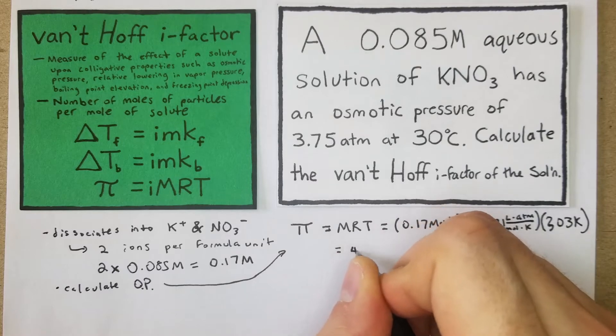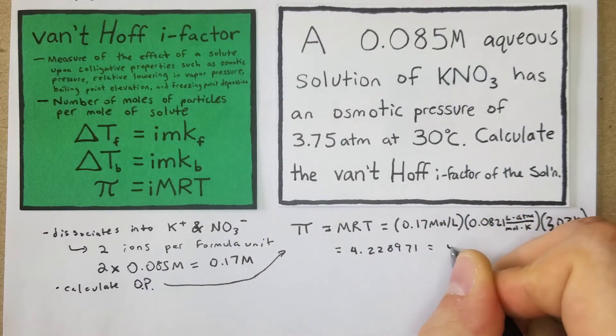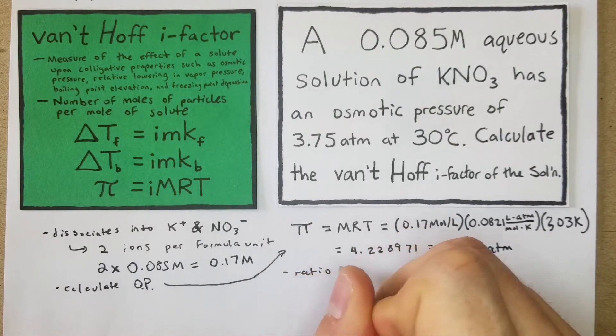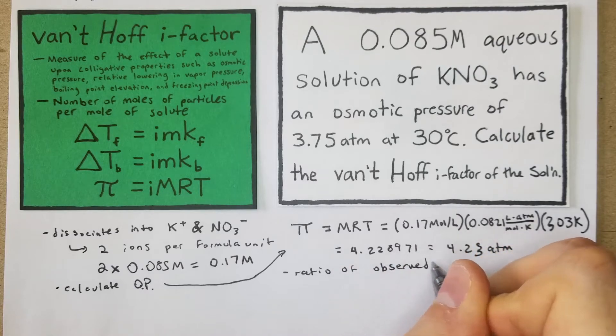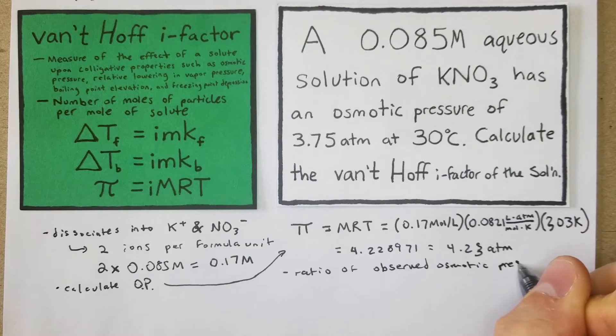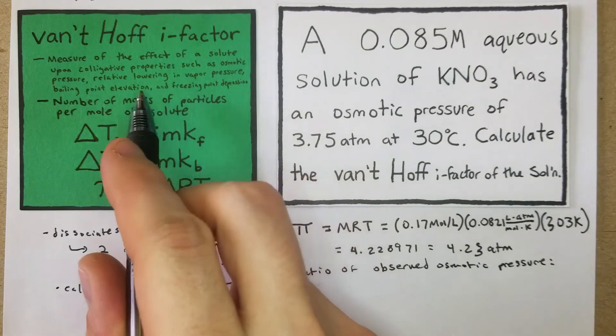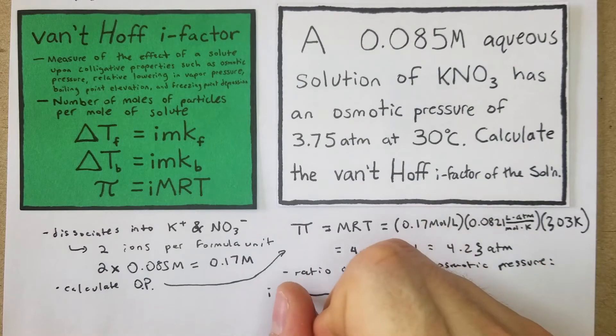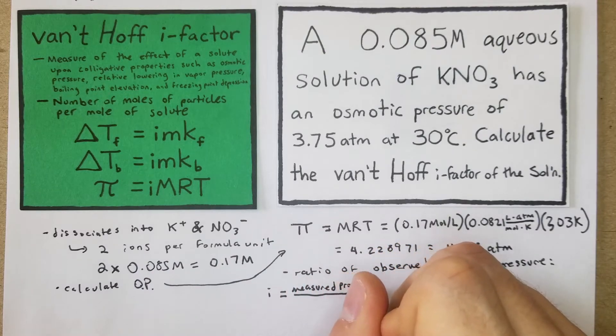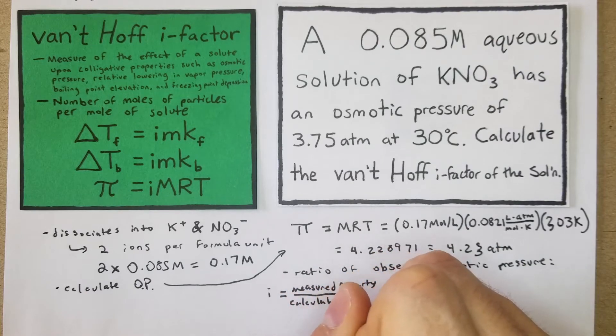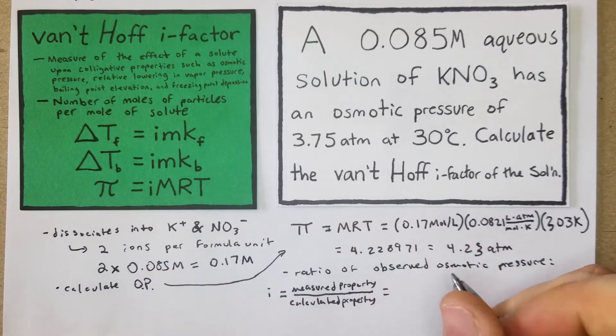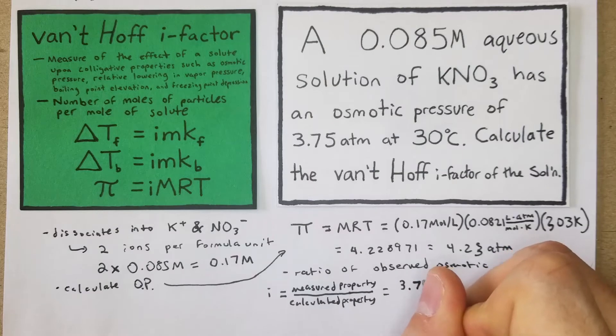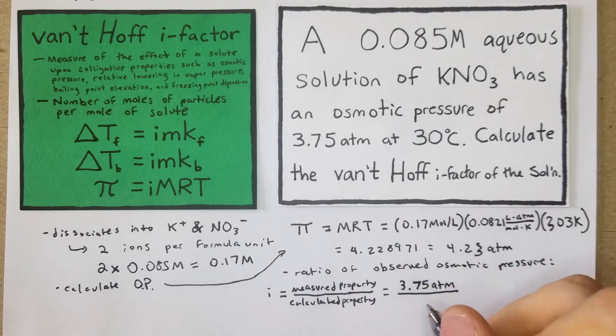Then we'll just solve for that. What I'm getting for that is 4.228971, which we'll say is 4.23 atm. So now we have a pressure. Now the next thing is the ratio of observed osmotic pressure. So basically we're doing what the van't Hoff i-factor is all about. We have i equals our measured property over our calculated property. In this case, that's going to be 3.75 atm over 4.23.